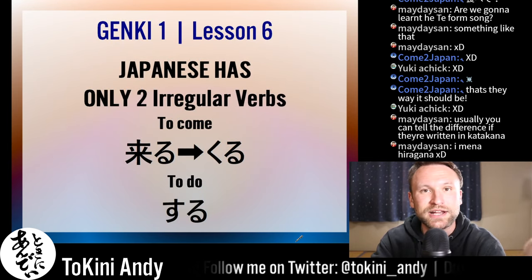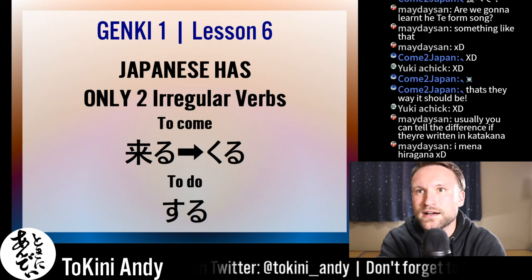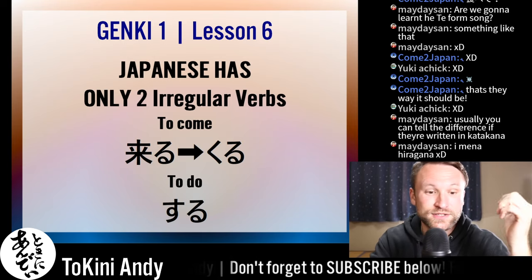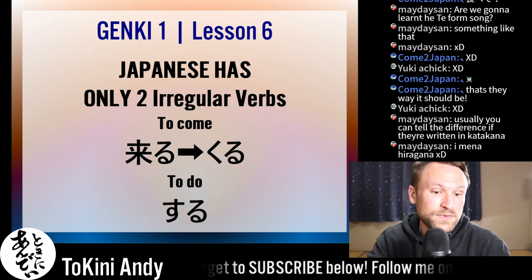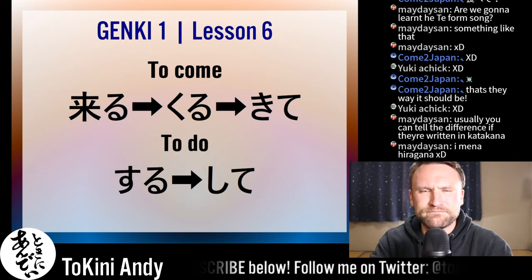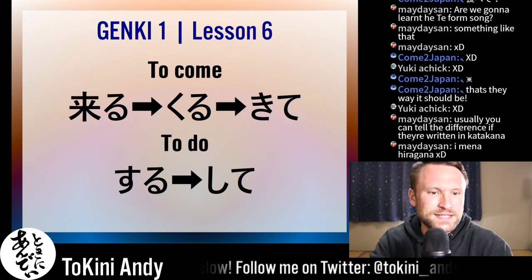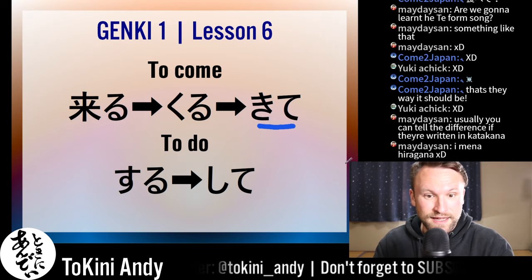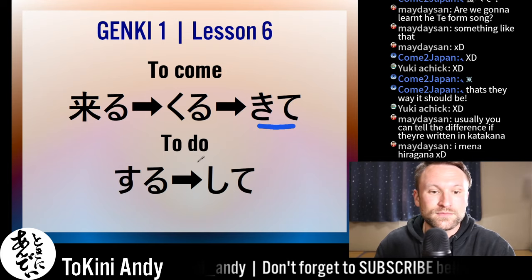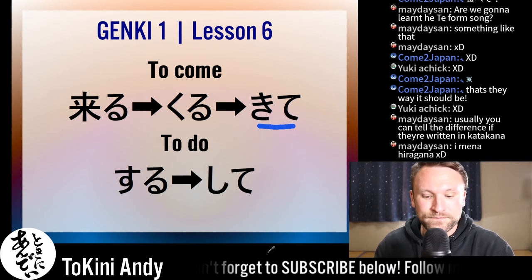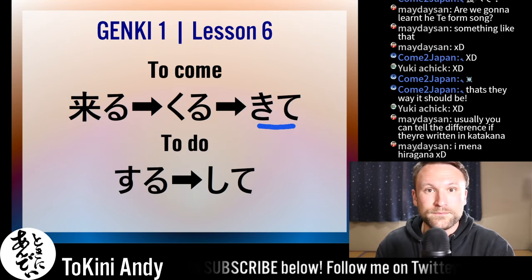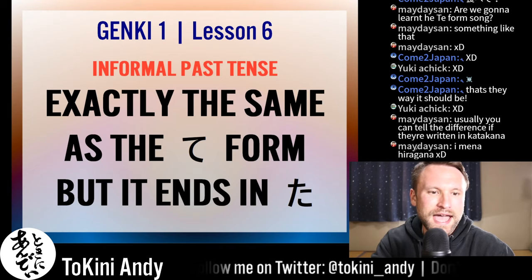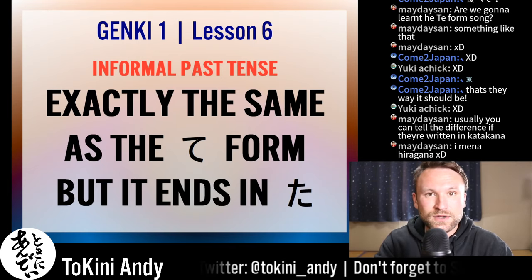Japanese only has two irregular verbs, which is amazing if you're coming from English or Spanish where there are so many. In Japanese there are just these two — 'kuru' and 'suru.' Kuru means 'to come' — the 'ku' becomes 'ki,' so it becomes 'kitte.' Suru means 'to do' and is often added to nouns to make verbs. Suru becomes 'shite.' For example, 'benkyou suru' — to study — becomes 'benkyou shite.' Go study!